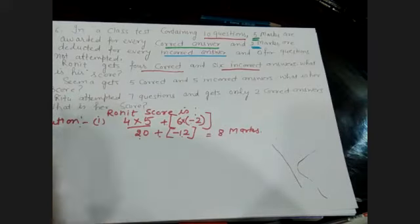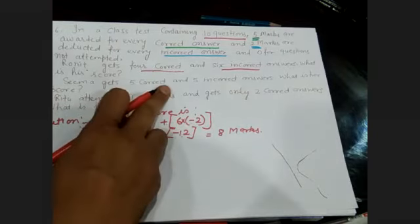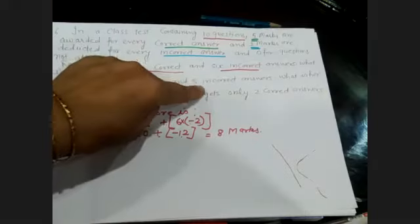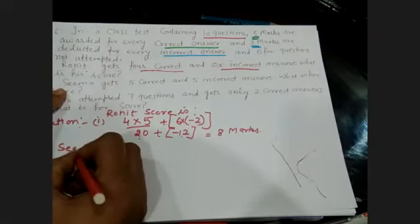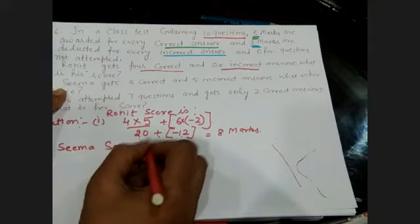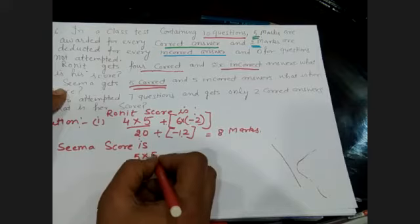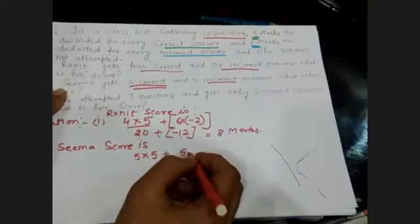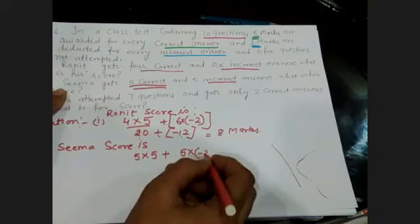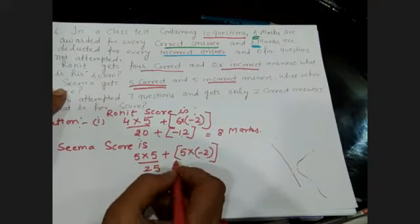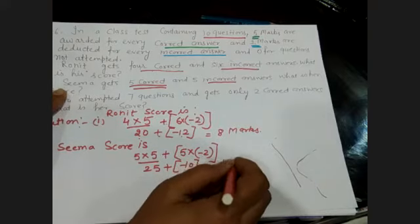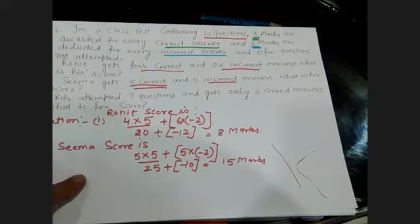Second: Sima gets 5 correct and 5 incorrect answers. She also attempted all 10 questions. Sima's score: 5 correct questions, so 5 multiply by 5 equals 25. Plus 5 incorrect questions, so 5 into minus 2 equals minus 10. Her score is 25 minus 10 equals 15 marks.